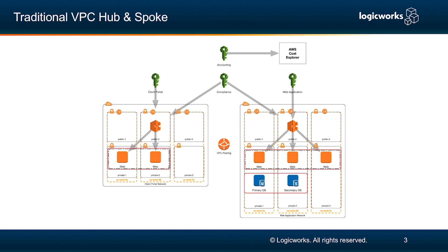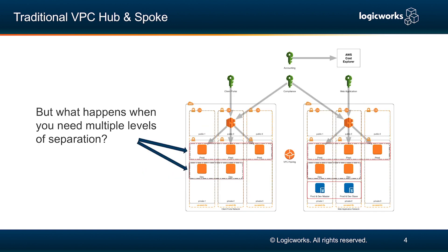It's a beautiful architecture, but what happens if you have multiple levels of separation? Let's say you have a production environment, a development environment, stage — whatever the different SDLC tiers are — then you get into a little bit of an issue, because everything is going to be housed in the same VPC. As you can see on the left-hand side, you're going to have production and dev both within the same VPC, or on the right-hand side, production and dev actually share the same database, which is a big no-no.